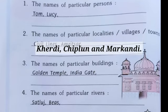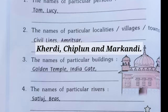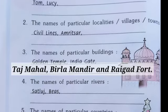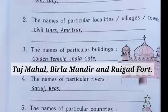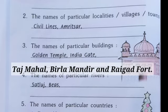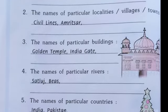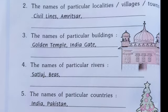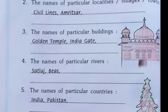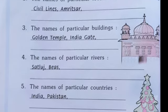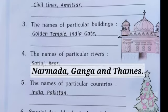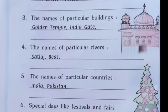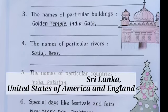The third category has names of popular monuments and landmarks like Golden Temple and India Gate, so we can add Taj Mahal, Birla Mandir, Raigad Fort, and anything else you could think of. For rivers, we add examples in the fourth one. In the fifth one, the names of countries — India and Pakistan — could have the addition of Sri Lanka, United States of America, and England.